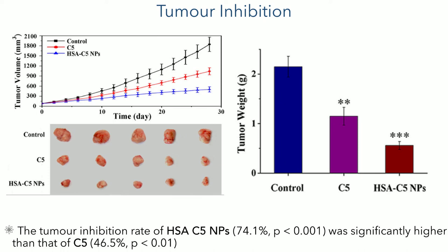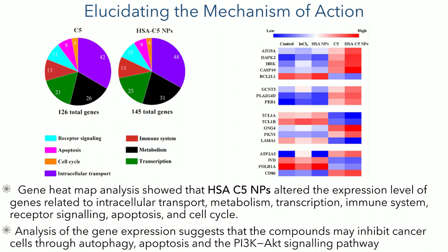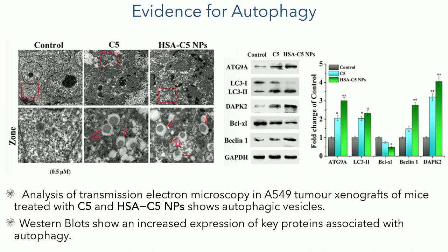Having demonstrated the efficacy of these compounds in vivo, the researchers then turned their attention to elucidating the mechanism of action. They studied the expression of cancer genes using gene chip analysis, which showed that the administration of these compounds altered the expression of genes related to intracellular transport, metabolism, transcription, immune system, receptor signalling, apoptosis, and cell cycle. By analysing the expression of these genes, it was suggested that these compounds may act by inhibiting tumour growth through autophagy, apoptosis, and the PI3K-AKT signalling pathway. Studying the tumour xenografts of A549 cells, they found evidence for autophagic vesicles supporting the hypothesis that autophagy is one of the mechanisms of action, further supported by western blot analysis showing an increase in key proteins associated with this pathway.